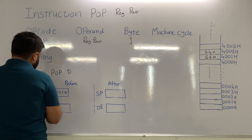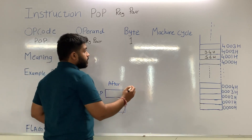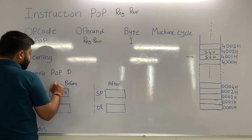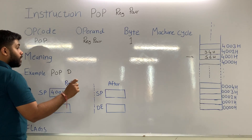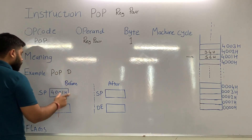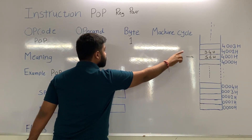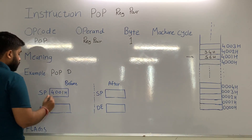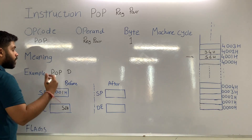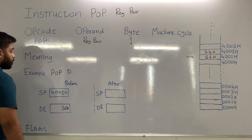Let's see how POP D works. Before execution, the stack pointer is pointing at 4001H. When POP D is executed, the data from the memory location where the stack pointer is pointing — that is, 56H at address 4001H — will be transferred to the lower byte of the DE pair. After that, the value of the stack pointer will be incremented by 1, so the stack pointer becomes 4002H.